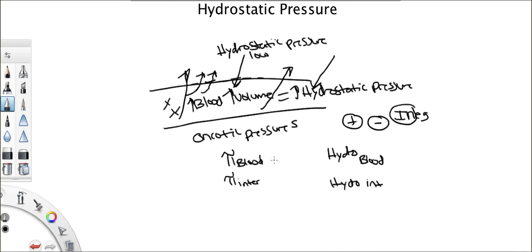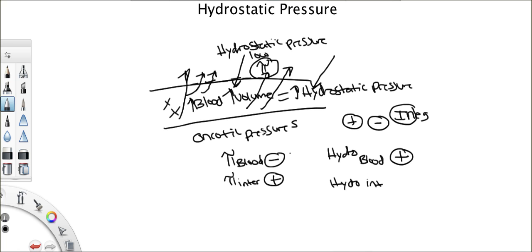The oncotic pressure of the blood brings fluid in, so we give it a negative value. The oncotic pressure in the interstitium brings fluid out, so we give it a positive. The hydrostatic pressure of the blood is a big positive because it's pushing fluid out. The hydrostatic pressure in the interstitium is a negative — it's pushing fluid in.